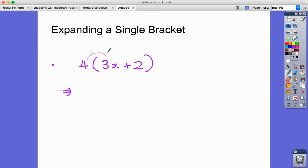So if we go first of all and multiply the 3x by 4, what we're going to get is 4 times 3x. 4 times 3 is 12x. And if I go and do the same thing with the 2, times the 2 by the 4, I'm going to get an answer of 4 times 2, which is 8. So basically all it is is that everything inside the bracket is multiplied by the thing outside the bracket.